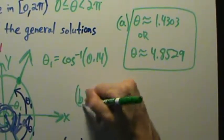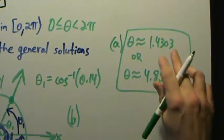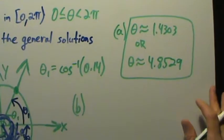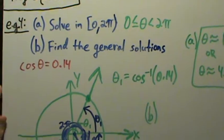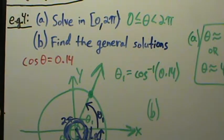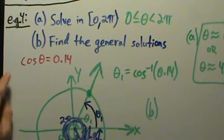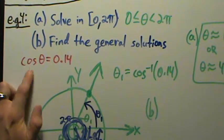Now how about part B? Well, just like in the previous examples, all we do is take our answers for part A and then add the 2k pi. So for the previous examples, we had the sine function and we added 2k pi because the period of the sine function is 2 pi. Well, the period of the cosine function is also 2 pi.